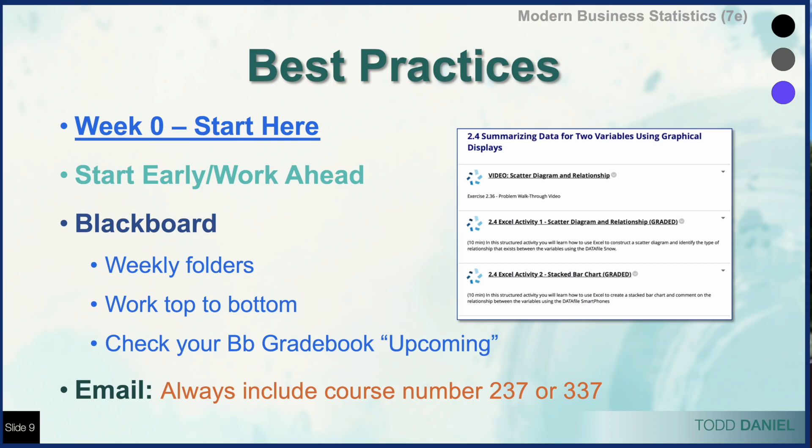One more thing about email: you're welcome to email me and the contact information is in our course. However, when you email, please include something that helps me know who you are. Tell me whether you're enrolled in 237, which is Basic Business Statistics, or 337, which is Applied Business Statistics, and I'll find you easily. If you say 'Hi, this is Jimmy from your class,' that's difficult. But if you include your first and last name, course number, and the specific week or assignment you're asking about, I can answer very quickly. The more information you give me up front, the quicker I can respond.